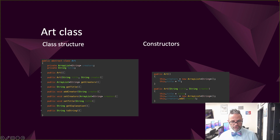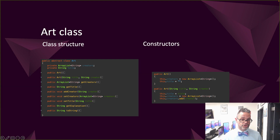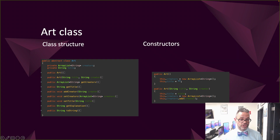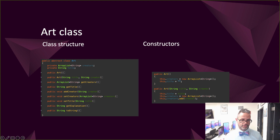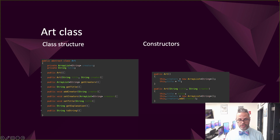The constructors here are for an abstract class, so I can't instantiate them directly, but I can reference them using super. I have a no-parameter constructor and a two-parameter String constructor that I can use to initialize those data members and work with them inside that structure.